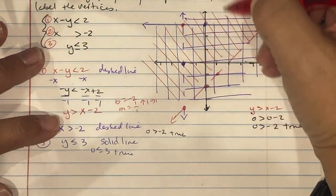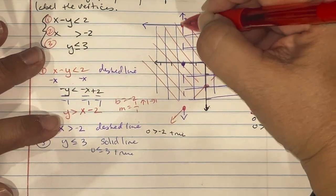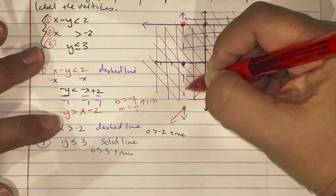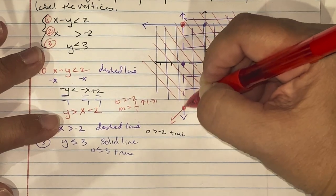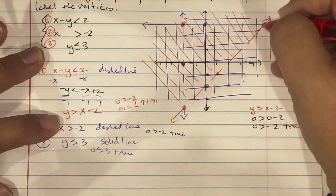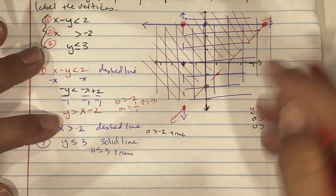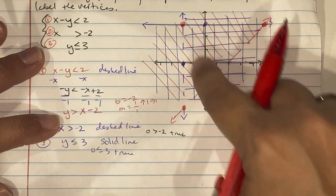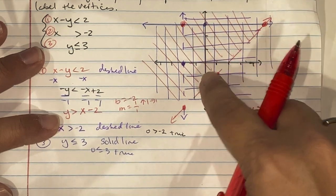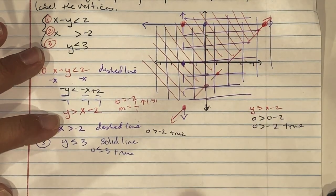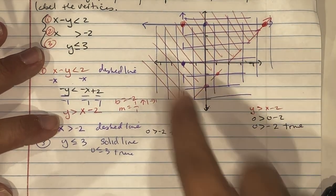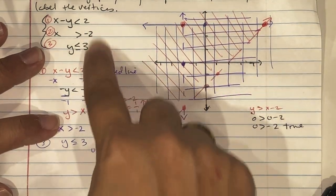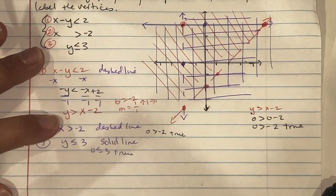The three points of intersection are our vertices. The triangular region where all three shaded areas overlap is the solution set for all three parts of the system.